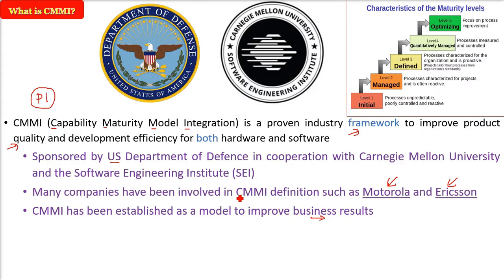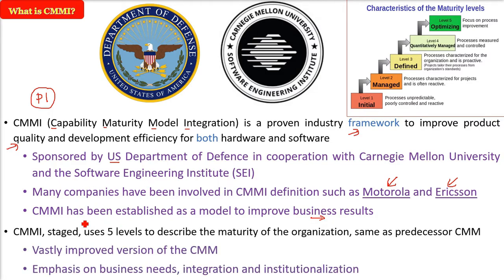The improvement of business results is the core of CMMI. There are five different stages that describe the maturity level an organization has attained in terms of quality. This CMMI is a vastly improved version of the earlier Capability Maturity Model, with emphasis on business needs, integration, and institutionalization.